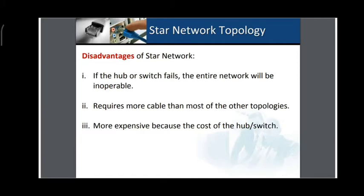Disadvantages of star topology: if the hub or switch fails, the entire network will be inoperable. It also requires more cable than most other topologies, and is more expensive because of the cost of the hub or switch. Unlike ring and bus topologies — which do not require a hub — star topology compulsorily requires a hub or switch.